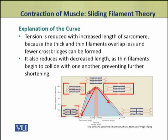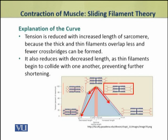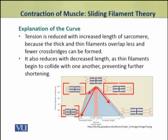When the sarcomere length becomes too short, tension also decreases because in that case the actin filaments begin to collide with each other, so fewer cross bridges are formed. It is actually the number of cross bridges that determines the tension produced in the sarcomere.